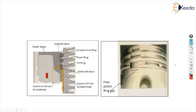This is the diagram of the piston and the piston rings. As you can see, there are three grooves — one, two, three — and these grooves contain the compression rings, wiper ring, and oil ring.